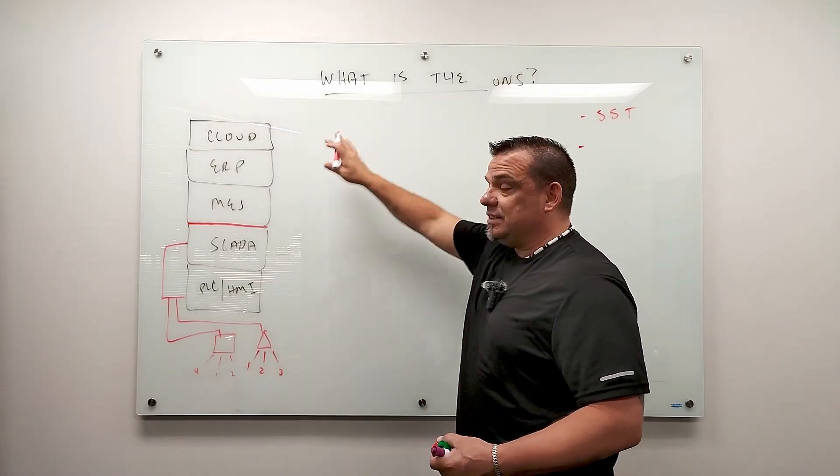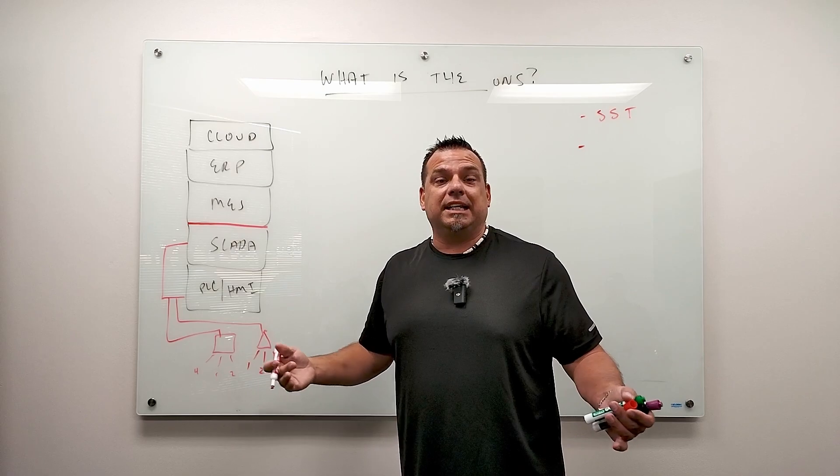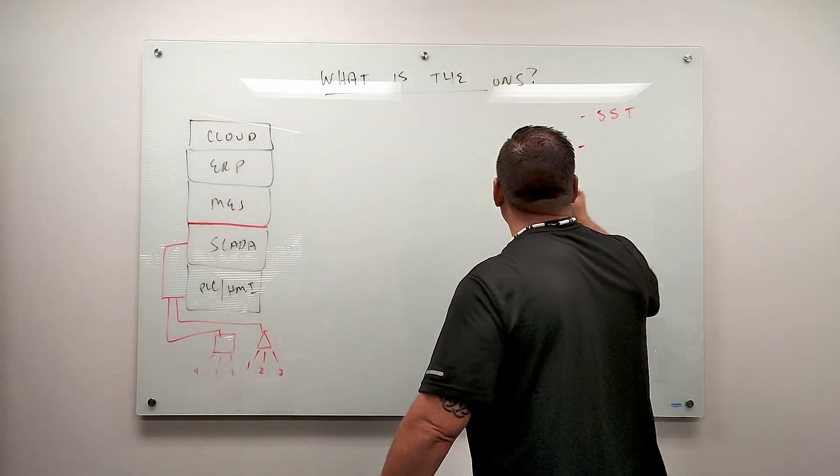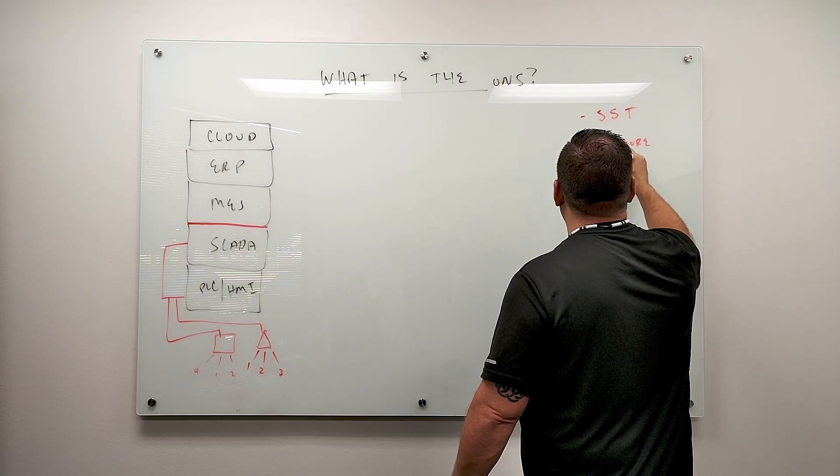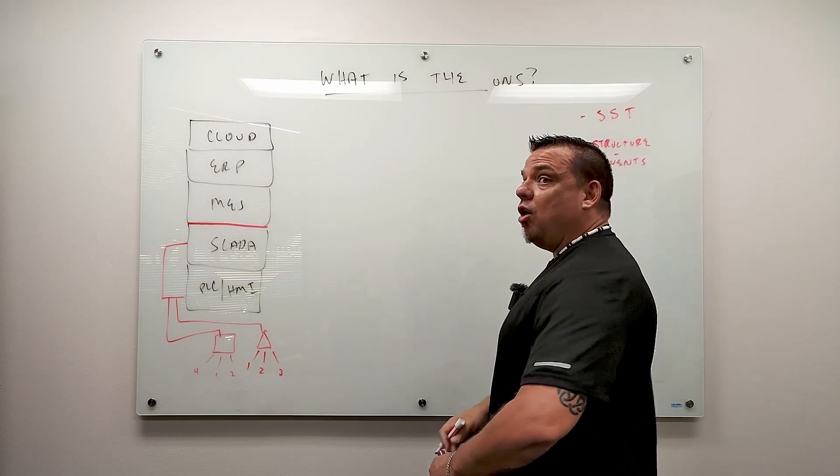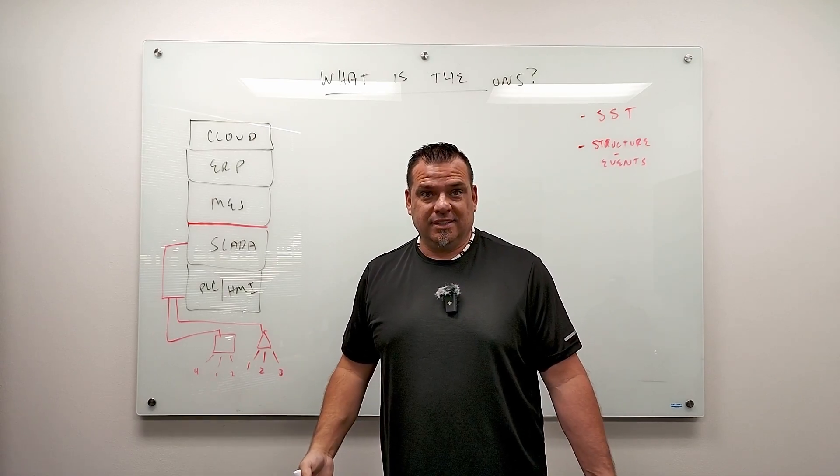Number two, for all this data, we need to structure it and we need to keep it updated. The unified namespace is the structure and the events of your business. The whole business.